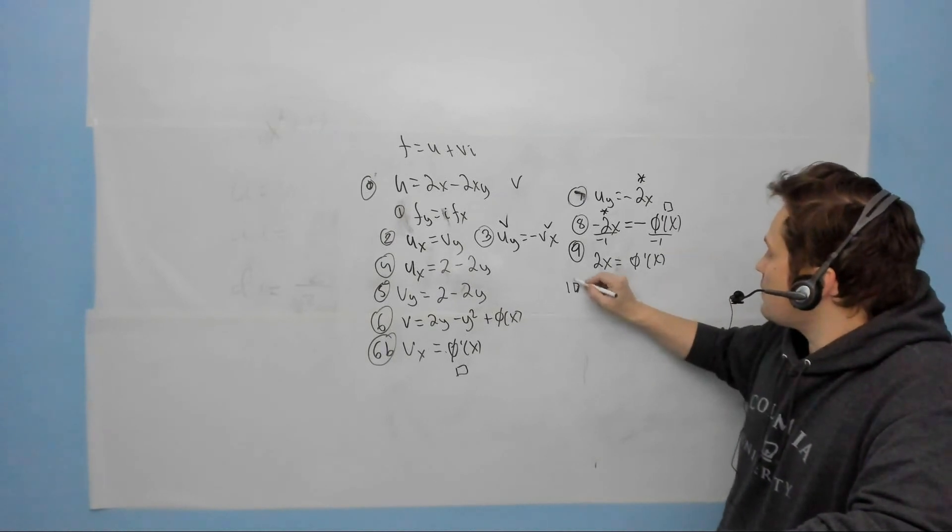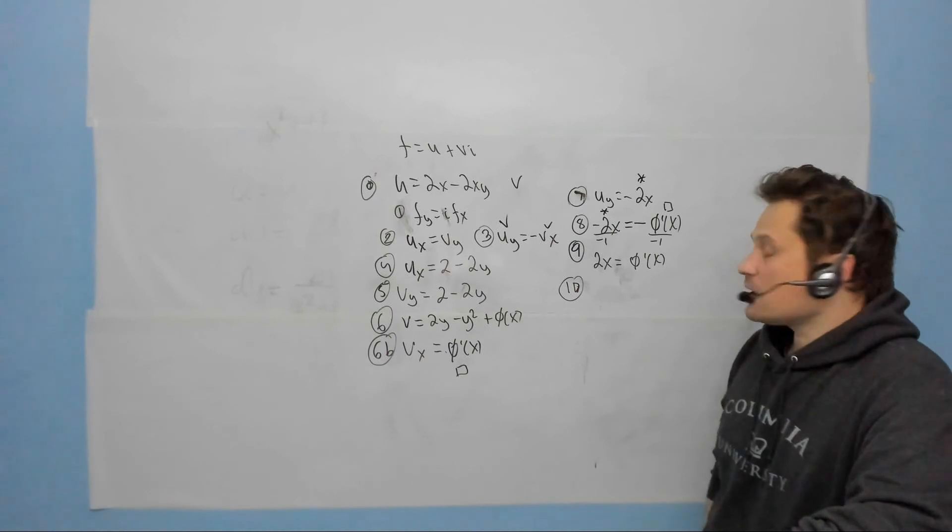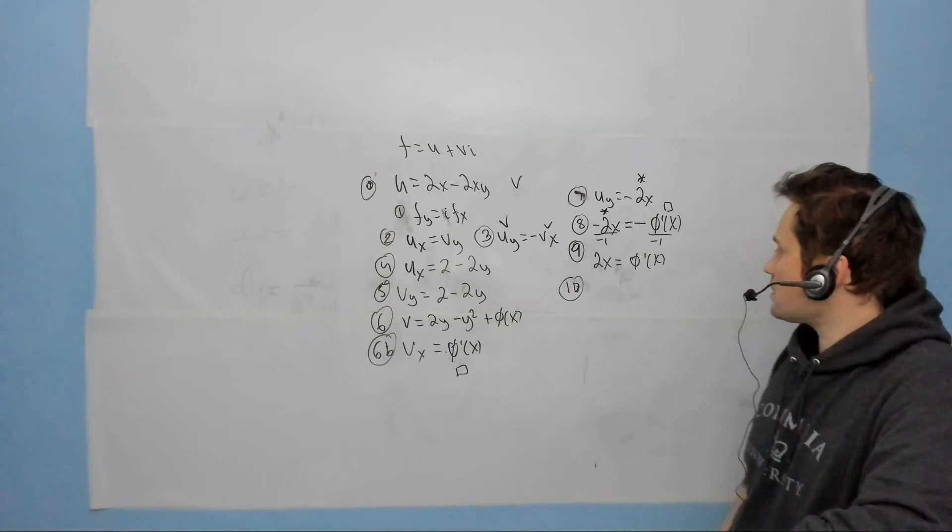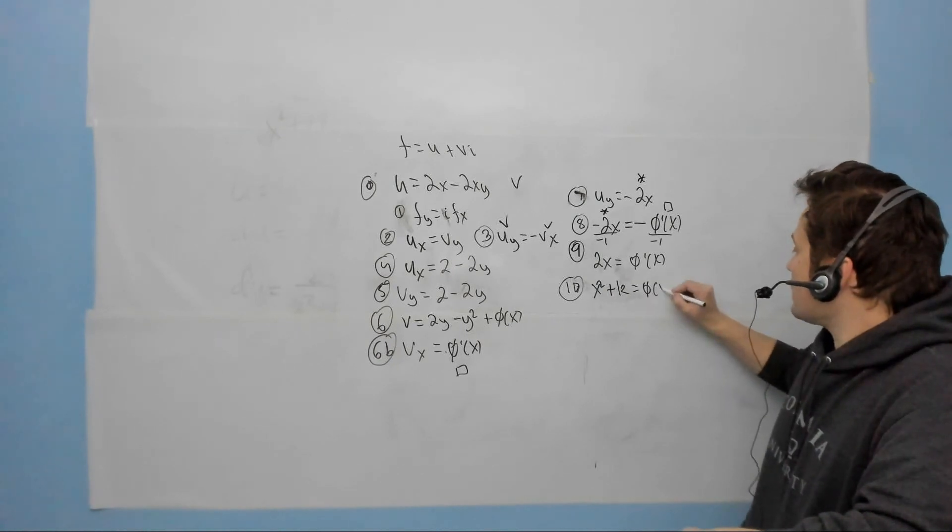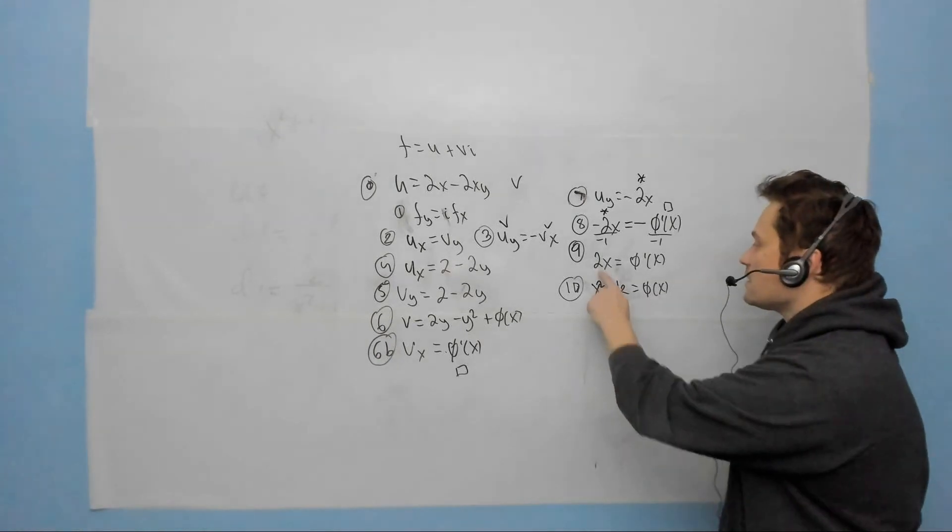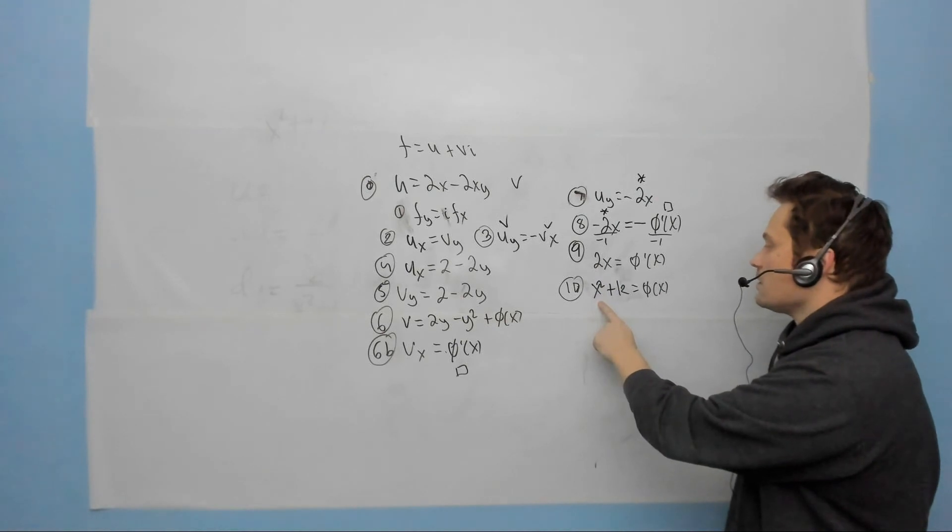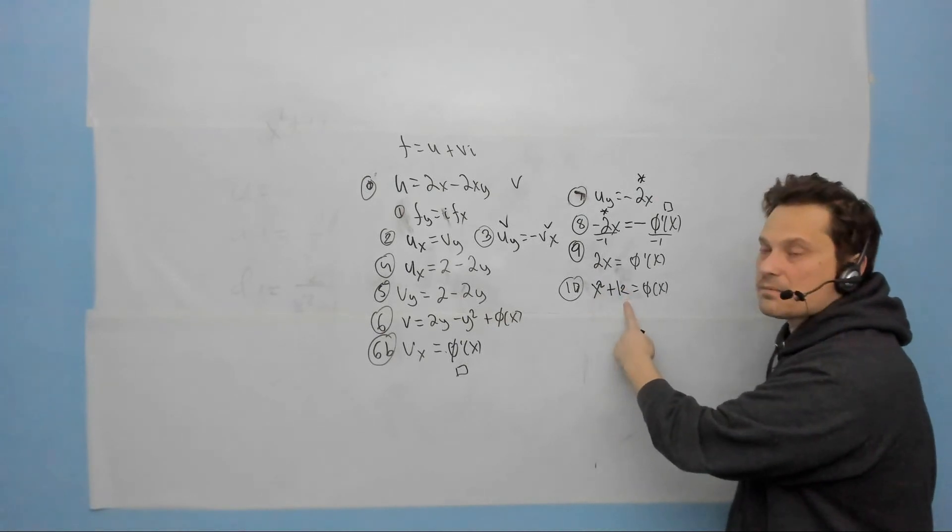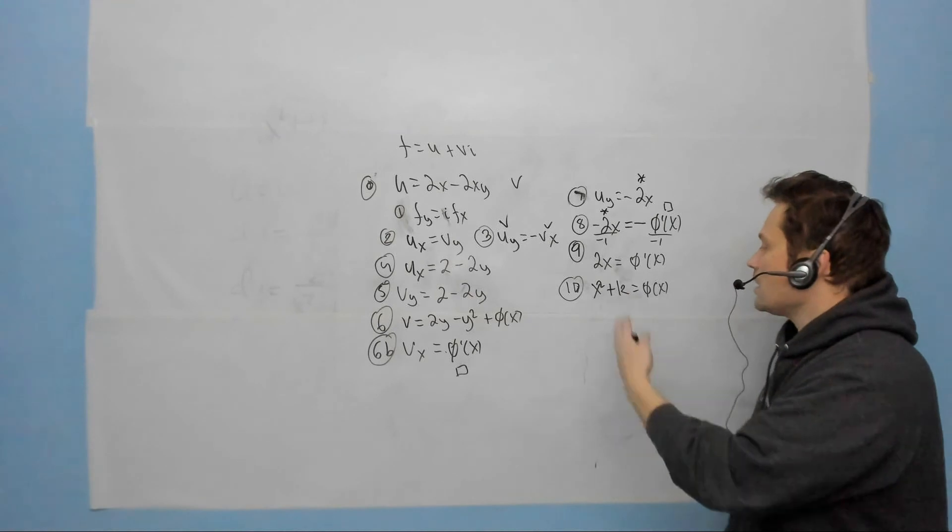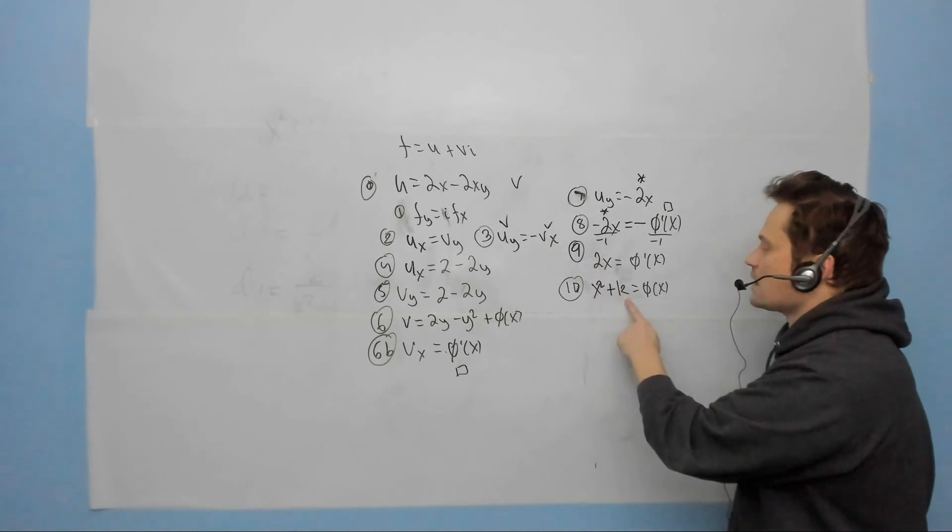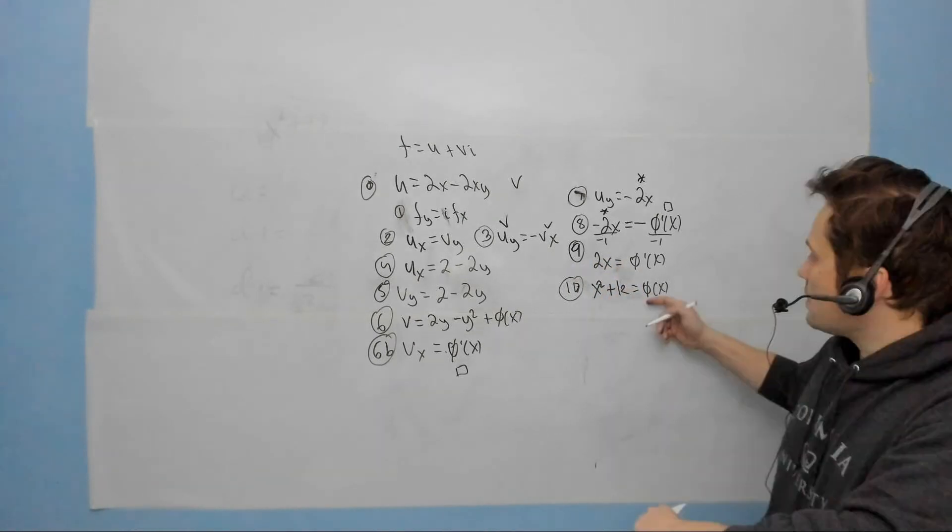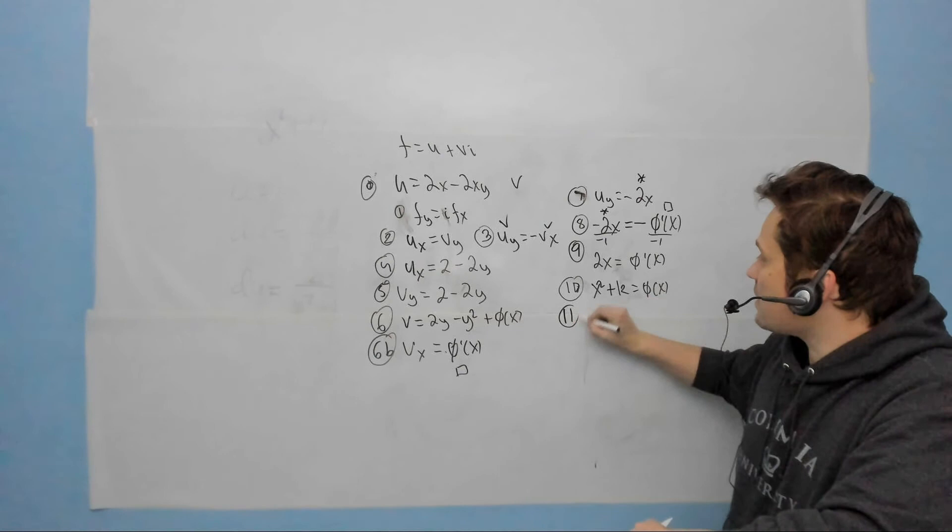At step 10, what I can do is anti-differentiate with respect to x. That's going to give me x squared plus k equals φ of x. The reason is 2x anti-differentiated is x squared, and also there's a constant you have to attach when you anti-differentiate. Or if you like, if you went back from 10 to 9, the derivative of x squared is 2x, the derivative of the constant would be 0. So now what I can do is put all of this together.